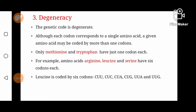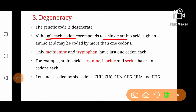Another property is degeneracy. Degeneracy means that although each codon codes for a single amino acid, a given amino acid may be coded by more than one codon. Yaani har codon kisi ek amino acid ke liye code kerta hai — woh ek se zyada amino acid ke liye code nahi kar sakta — lekin kisi ek amino acid ke liye ek se zyada codons ho saktay hain. Hamaray paas number of amino acids 20 hai aur number of sense codons 61, so when 61 codons code for 20 amino acids, there will be amino acids for which more than one codon exists.